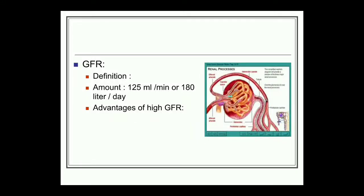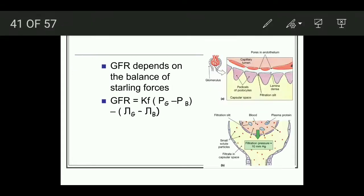Hello everyone. Today we will discuss glomerular filtration rate. Glomerular filtration rate is defined as the total quantity of filtrate formed by all the nephrons of both kidneys in a given unit period of time. The normal amount is 125 ml per minute or 180 liters per day. This is very high. The advantage of this high GFR is that 3 liters of plasma in our body is filtered 60 times a day, and therefore no impurities are left.